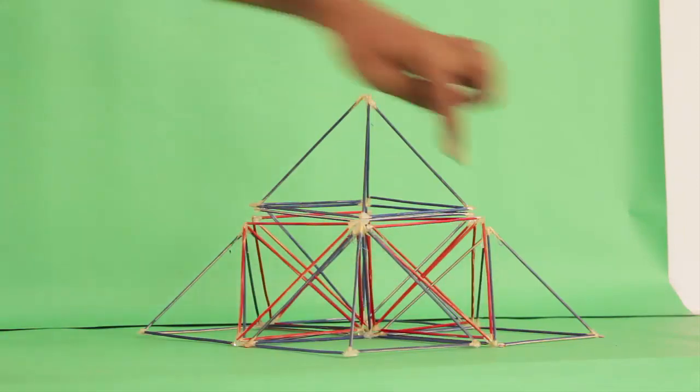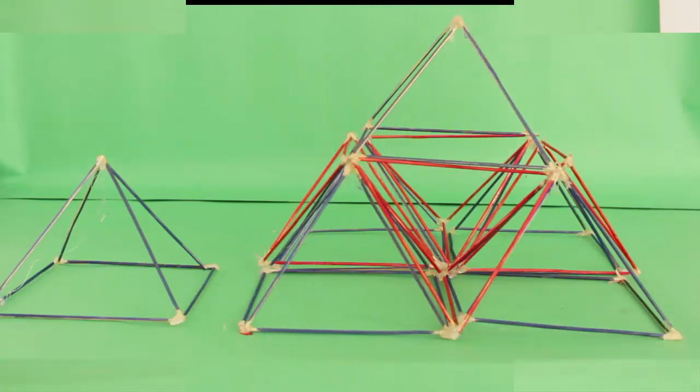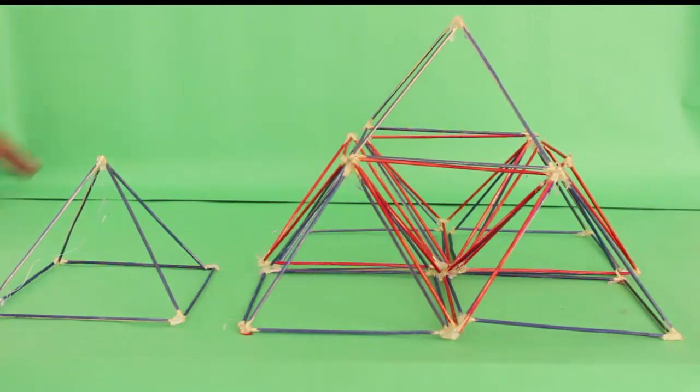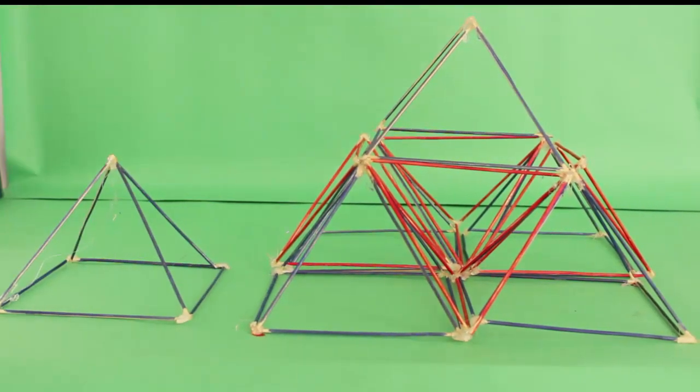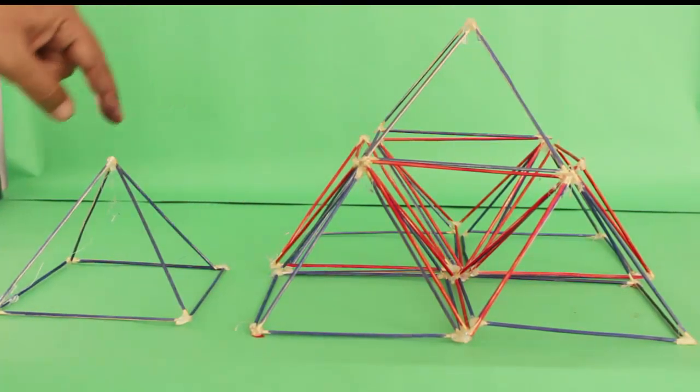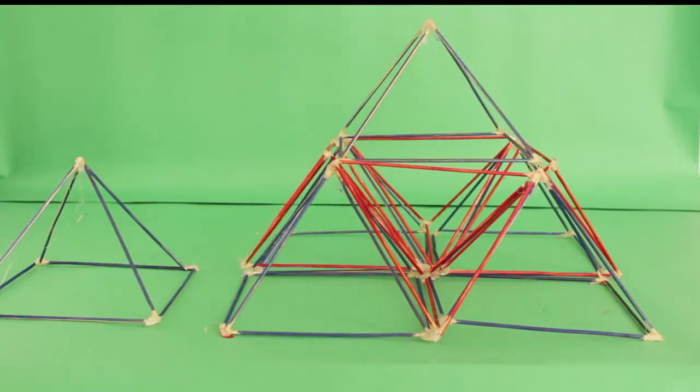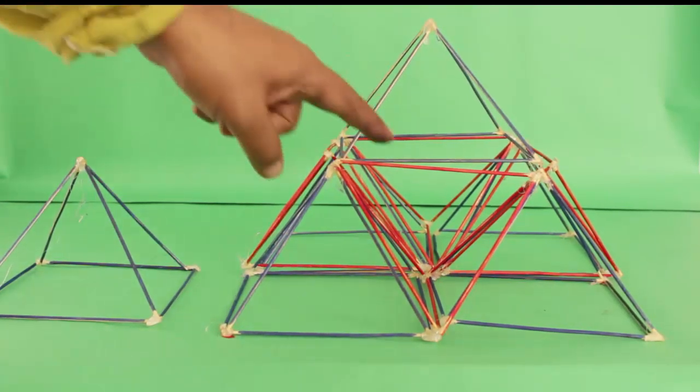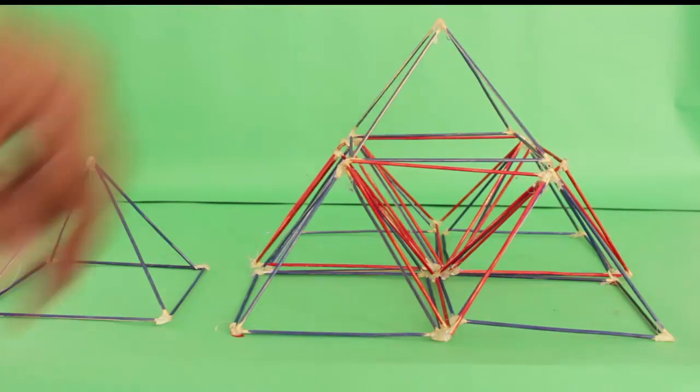And now we can try to dismantle this pyramid. It is made of 6 square pyramids and 4 tetrahedrons. Once we remove them, we can see the relationship between the square pyramid and the tetrahedron. This square pyramid has twice the volume of the red tetrahedron.